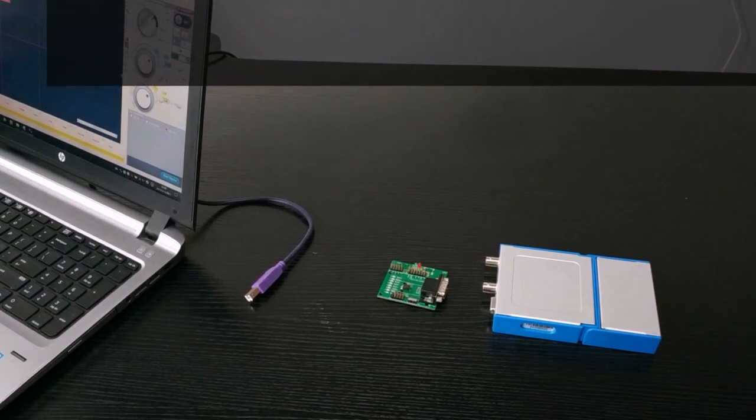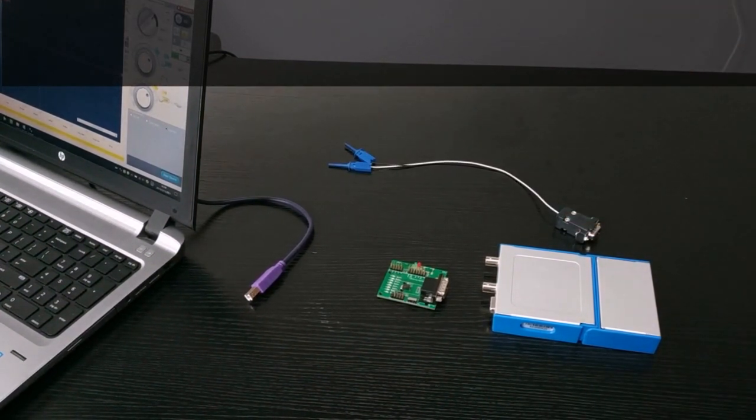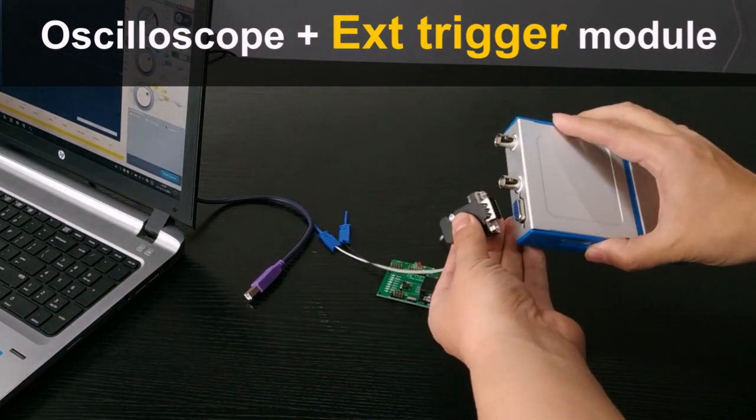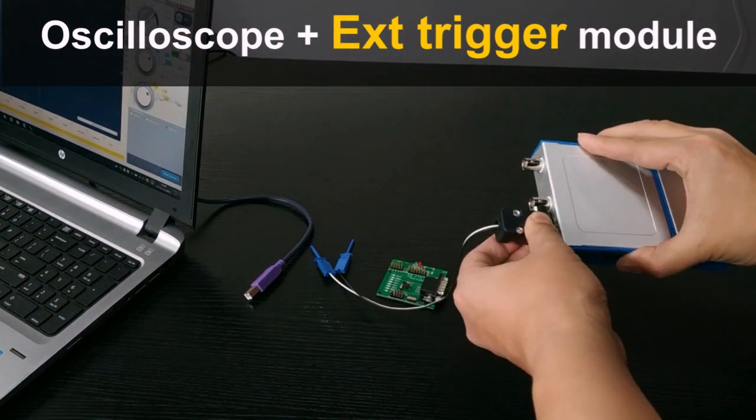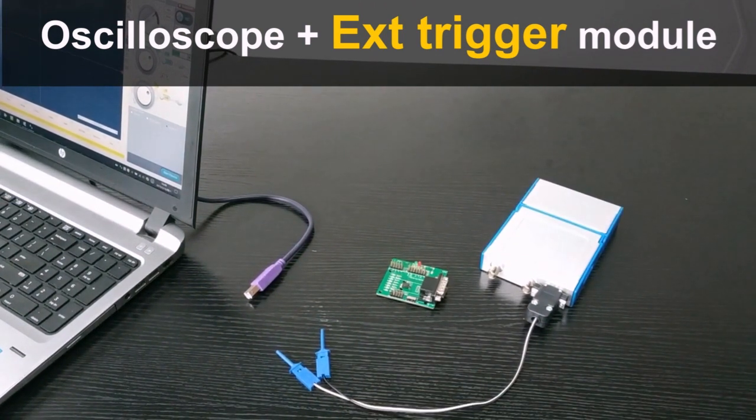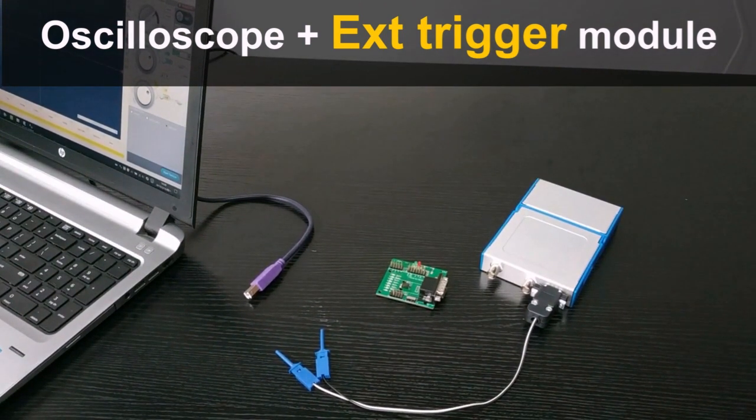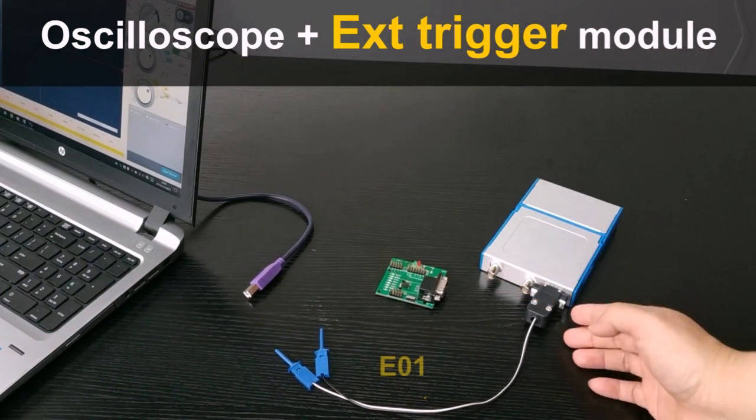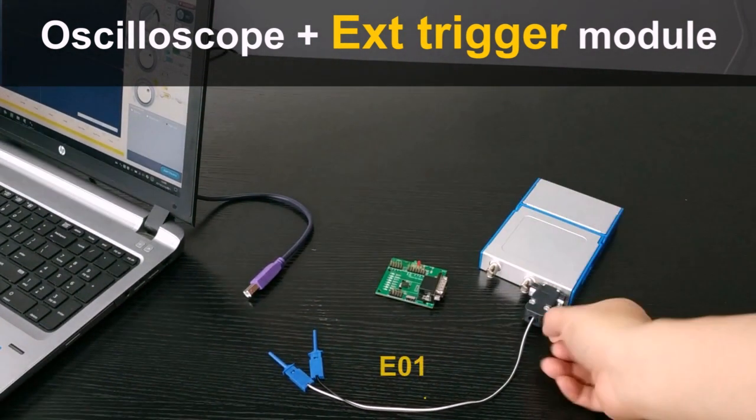For example, this is an external trigger module. So with these modules it is possible to command the data acquisition with an external signal. With this module this oscilloscope now can be triggered from channel A or it can be triggered with an external signal.